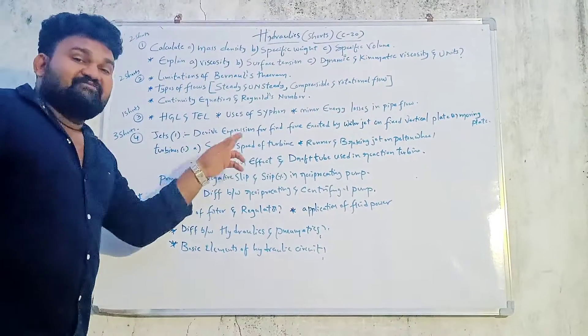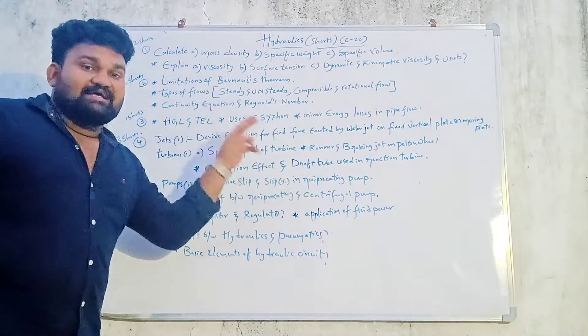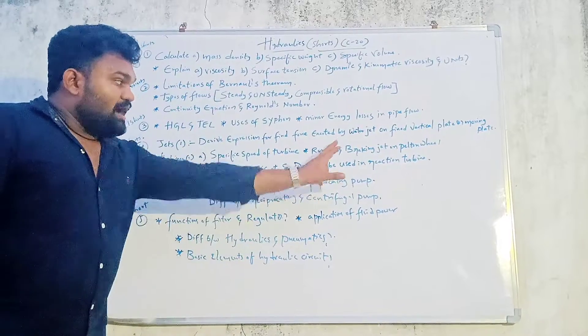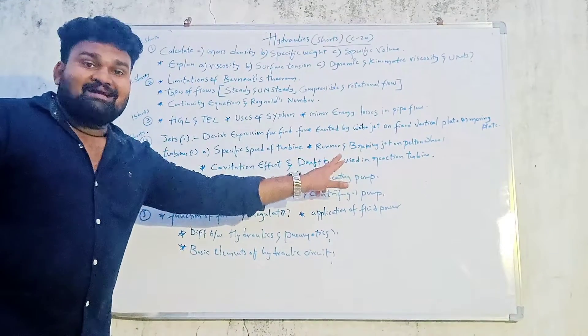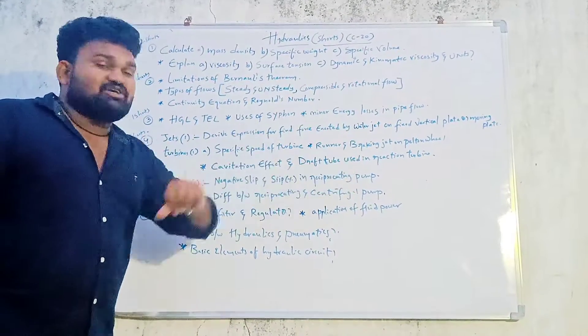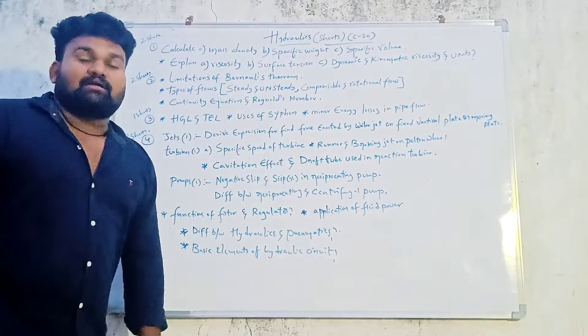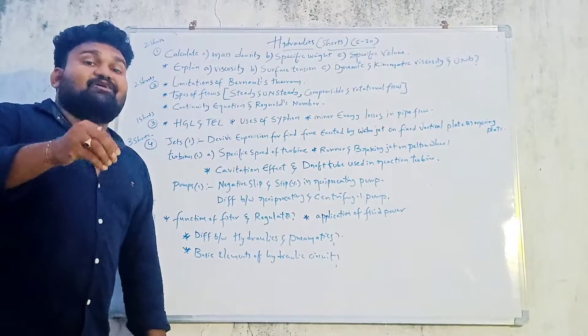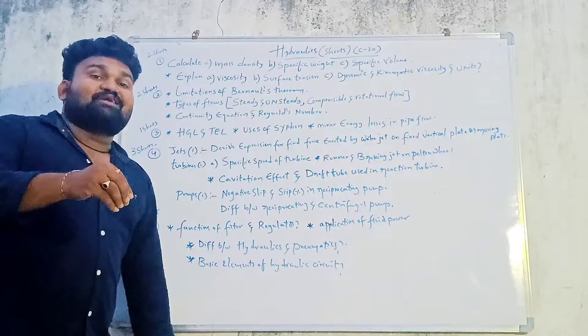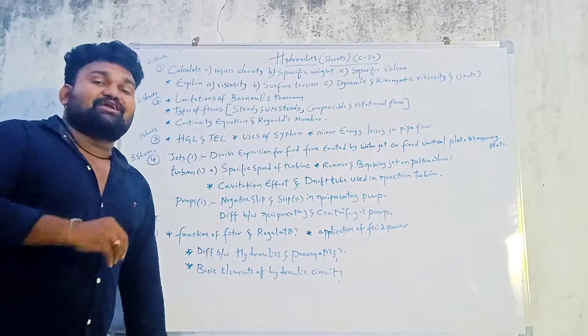What is the specific speed of a turbine? What is the runner and braking jet of a Pelton wheel? The Pelton wheel runner and braking jet will be important.